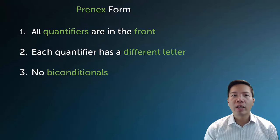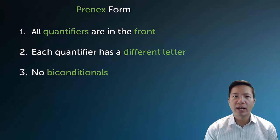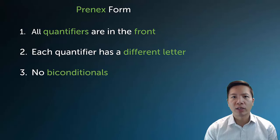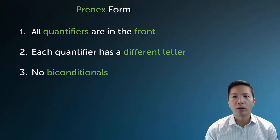With our confinement rules, we can put sentences into something called prenex form, or prenex normal form. In prenex form, all quantifiers are stacked up at the front, followed by a clean symbolic sentence with no more quantifiers. Each quantifier uses a different letter so there's no ambiguity about which quantifies what, and there are no biconditionals — those have been split into conjunctions with conditionals.